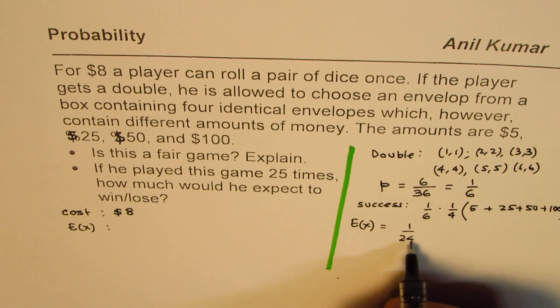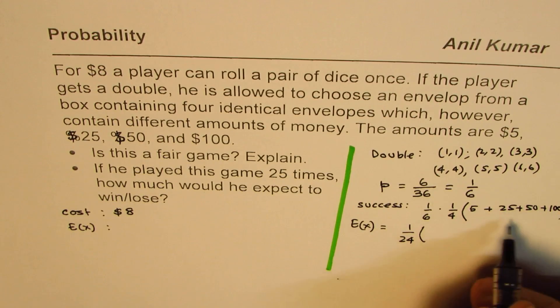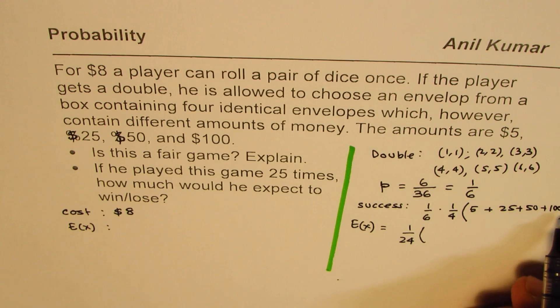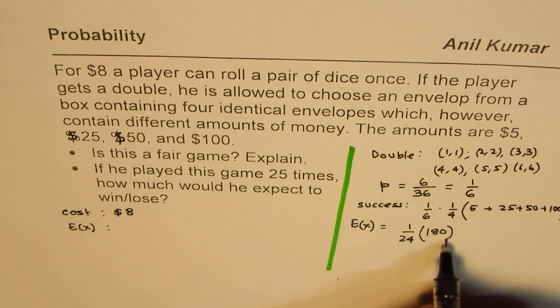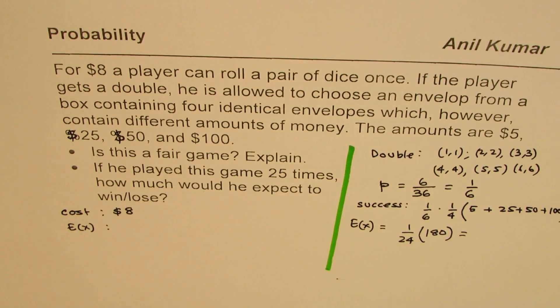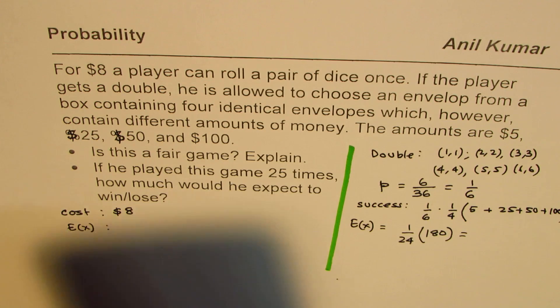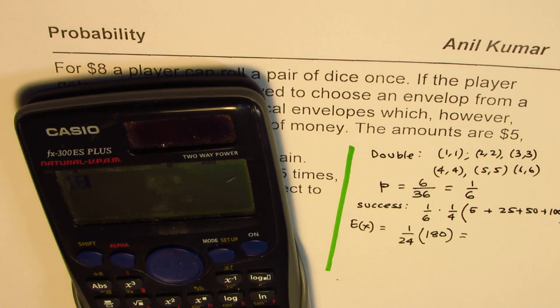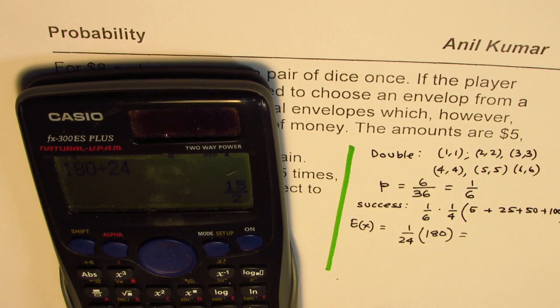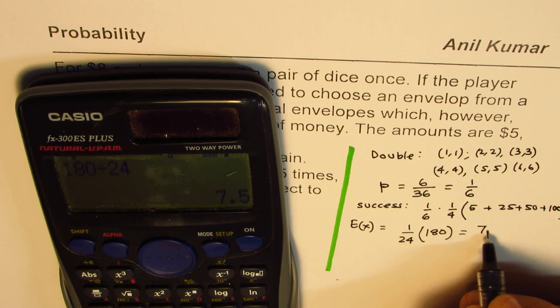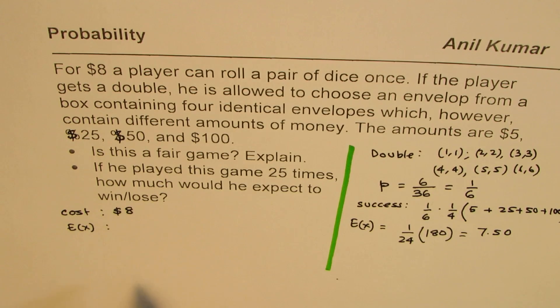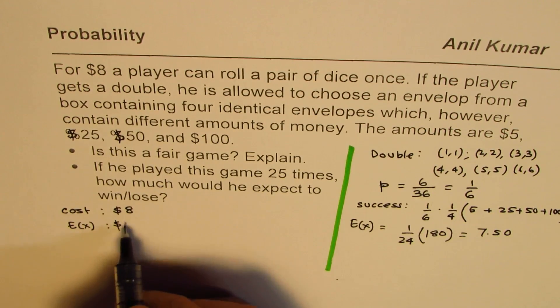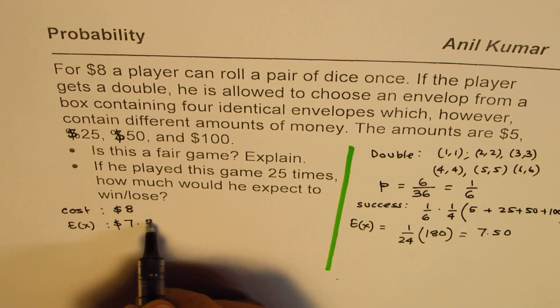This is 1 over 24 of add all this. So 150, 175, 180. So we can always use calculator, find this value. It is 180 divided by 24, which is half of 15, or 7.50. Let me write 7.50.